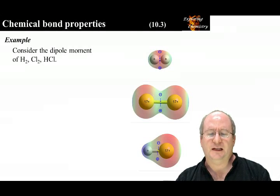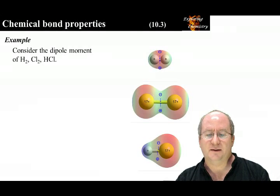Here are three different entities. In hydrogen, both atoms are the same and attract the electrons the same. The center of positive charge and center of negative charge are in the same location.